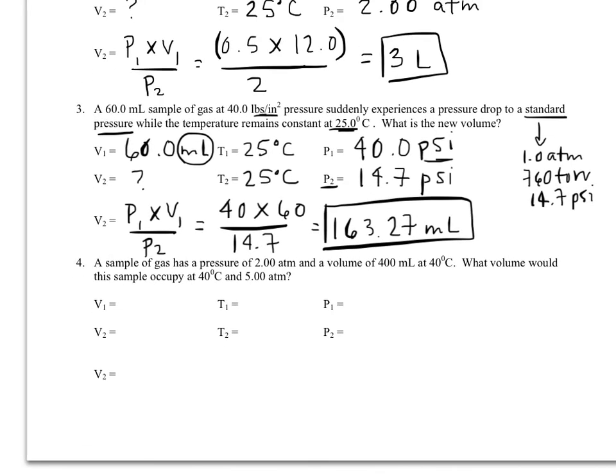We're going to do one last one here and you guys are going to finish the rest in class. So we have a sample of gas and its pressure is two atmospheres, a volume of 400 milliliters, and a temperature of 40 degrees Celsius. We want to know the new volume still at a constant temperature, but this time at five atmospheres of pressure. So if the pressure is going up, we'd expect the volume to go down.